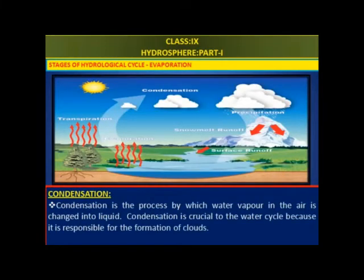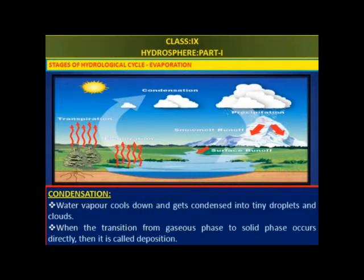Condensation is the process by which water vapor in the air is changed into liquid. Condensation is crucial to the water cycle because it is responsible for the formation of clouds. Water vapor goes down and gets condensed into tiny droplets forming clouds. When the transition from gaseous state to solid state occurs directly, it is called deposition.